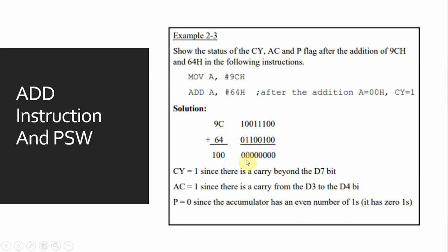Here you can see that there will be a particular carry beyond bit 7, so CY will be 1. Since there is again a carry from D3 to D4, AC will be 1. Here you can see the number of 1s is even—there are zero 1s—so the P flag will be 0.